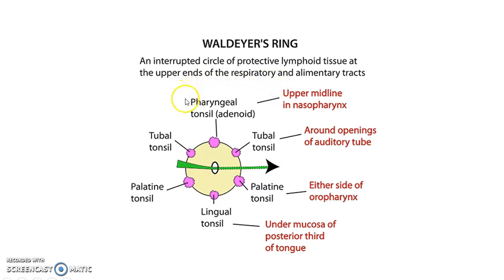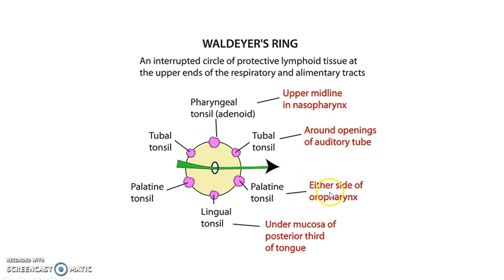From superior to inferior, it includes: 1 pharyngeal tonsil or adenoid, located in the upper midline in the nasopharynx; 2 tubal tonsils, located around the openings of the auditory tube on either side; 2 palatine tonsils, located on either side of the oropharynx; and 1 lingual tonsil, located under the mucosa of the posterior third of the tongue.